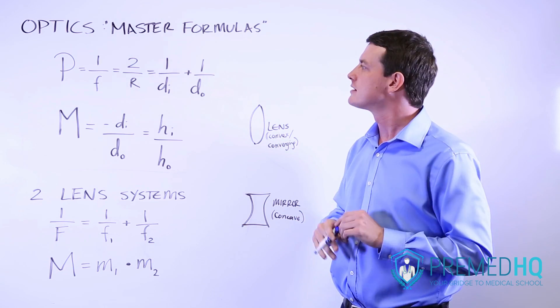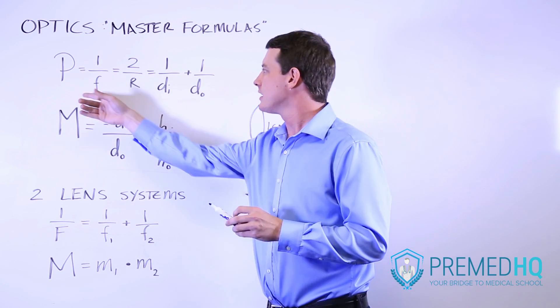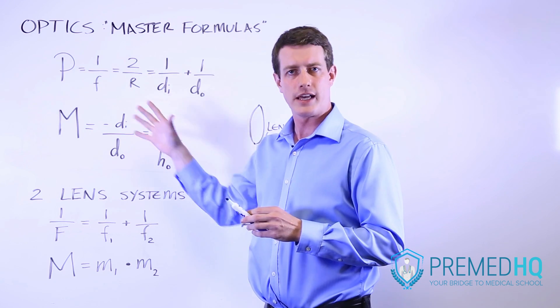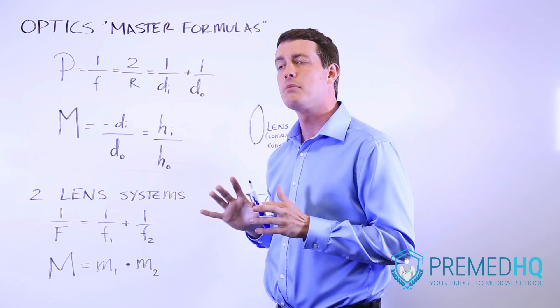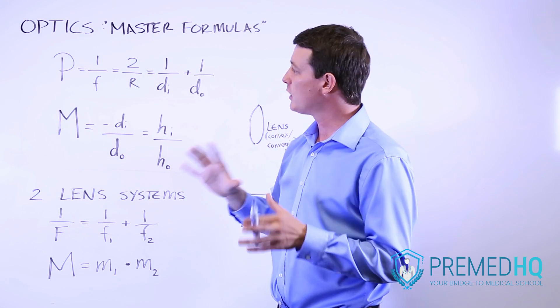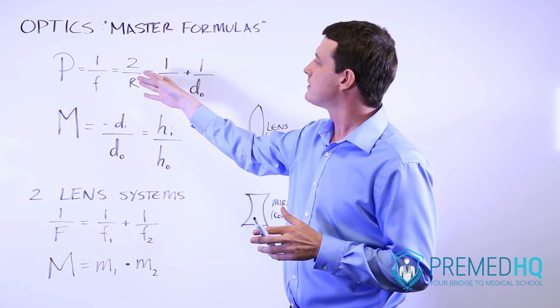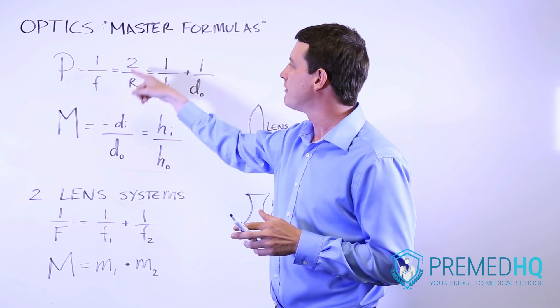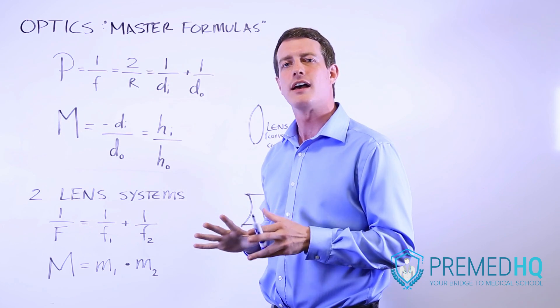The first part of this is that the power of a lens, which is measured in diopters, is equal to 1 over the focal distance of that lens. Now the focal distance of the lens is equal to half of the radius of curvature of that lens.